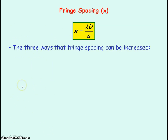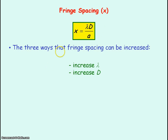From this equation, fringe spacing can be increased by increasing the wavelength, because wavelength is directly proportional to fringe spacing. It can also be increased by increasing D, the distance between the sources and the screen, because fringe spacing is directly proportional to D. Alternatively, fringe spacing increases by decreasing A, the distance between the two sources, because fringe spacing is inversely proportional to A.